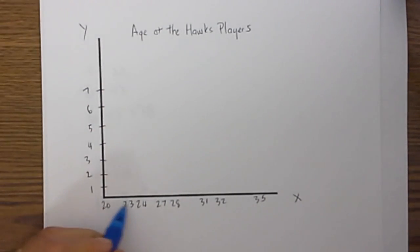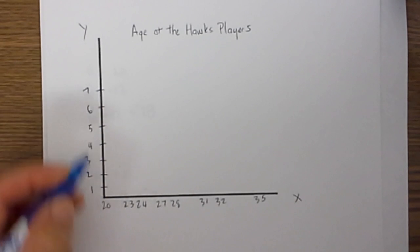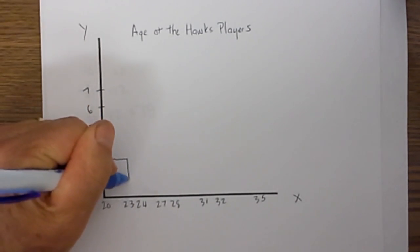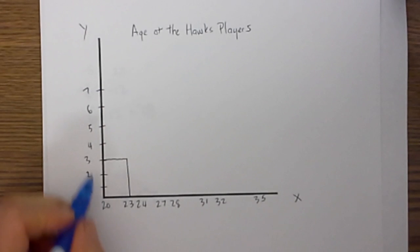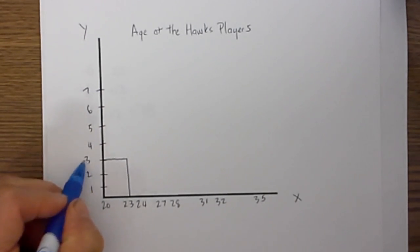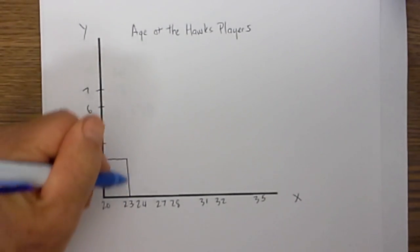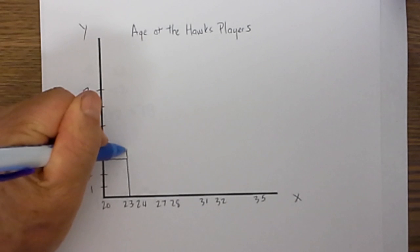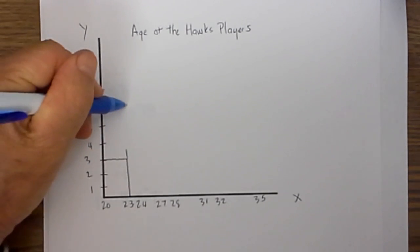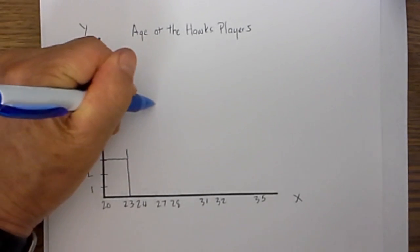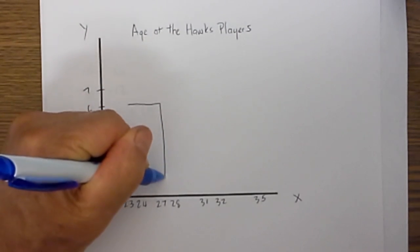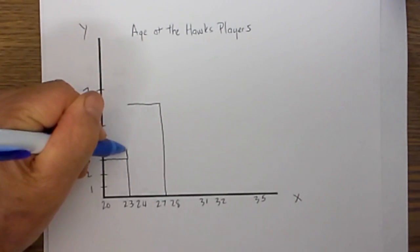And then from 20 to 23, I have 3, so I will draw the y axis at 3, the interval is 20 through 23. Next up is 24 through 27, and it is 6, so it will go up to here. I will move over to 27, and notice that they are touching.